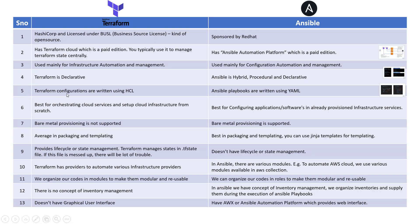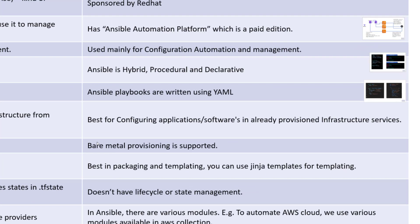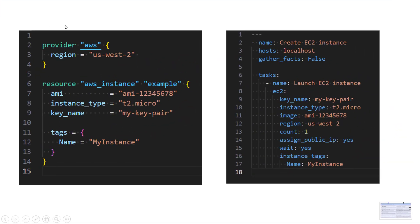Point number five: Terraform configurations are written in HCL, the HashiCorp Configuration Language, while Ansible playbooks are written in YAML. On the left you can see HCL code, and on the right is YAML syntax — YAML is also heavily used in Kubernetes. To work with Terraform you need to learn HCL syntax and structure. Personally, I find YAML playbooks a bit easier to write than HCL, though it depends on practice.